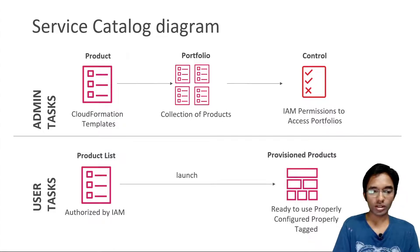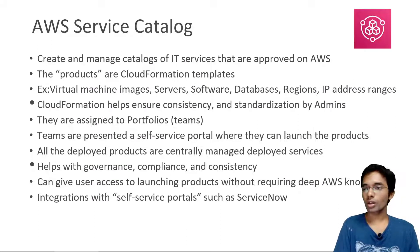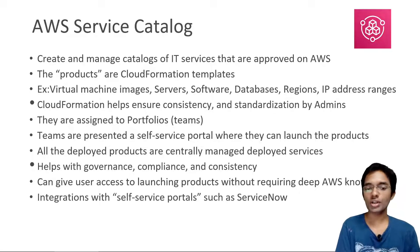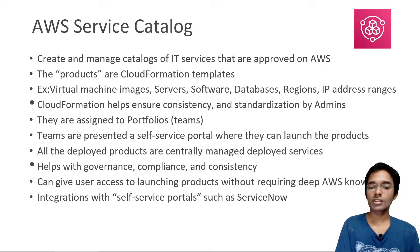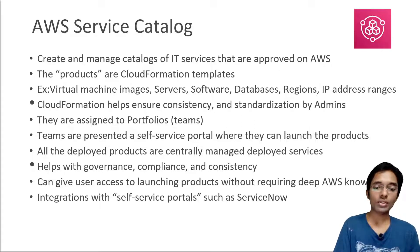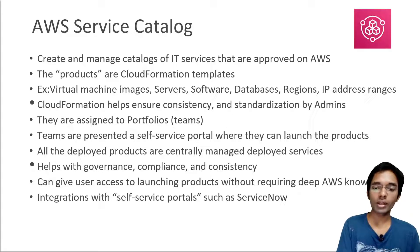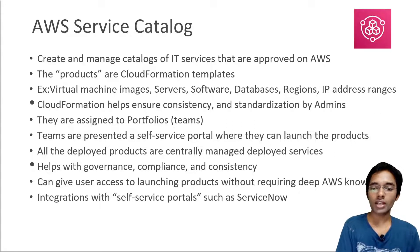Now let's go back to the theory of Service Catalog. We are creating and managing a catalog of IT services that are approved by our administrators on AWS. A product is a CloudFormation template — you can have virtual machine images, servers, software, databases, regions, IP address ranges, whatever you want. By using CloudFormation, we help ensure consistency and standardization defined by the admins. We don't give users the right to use CloudFormation directly; we give them only the right to use Service Catalog, which in turn uses CloudFormation as its backbone. Products are then assigned to portfolios or teams.